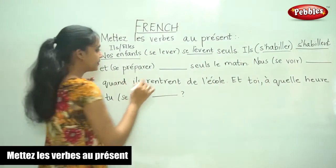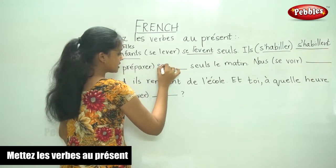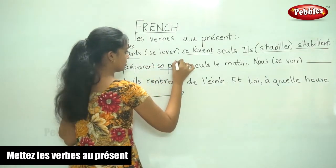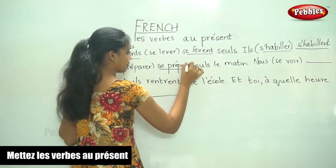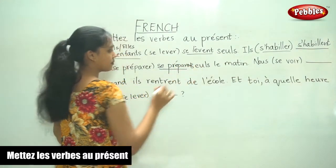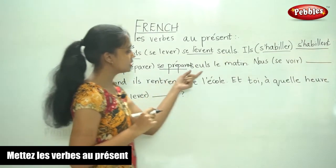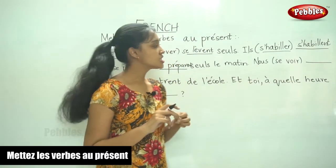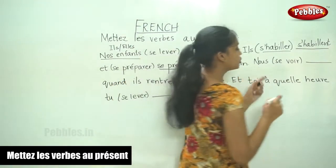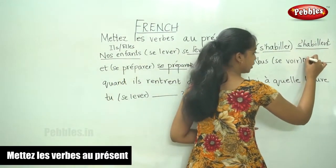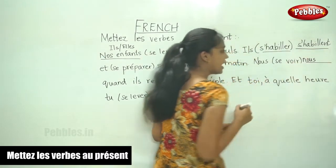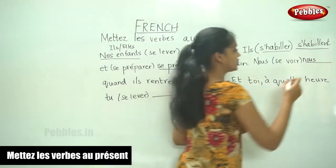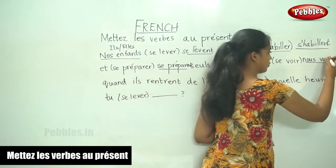Il s'habille. Next: se préparer is the verb. Again, se prépare becomes se prépare. Then nous, and the verb given is se voir. For nous, the reflexive is nous and for voir, the nous conjugation is voyons.